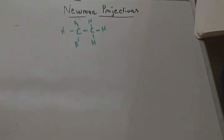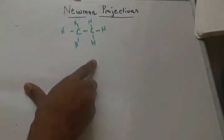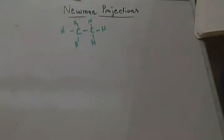So ethane is C2H6 and I drew that, or I wrote it out over here. And a Newman projection is basically going to look at the whole structure from one carbon to carbon bond.